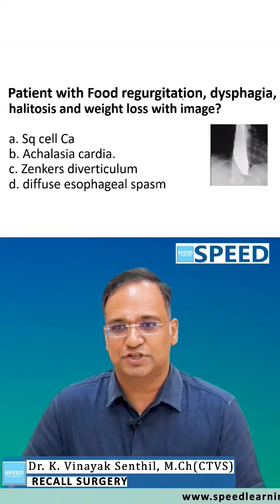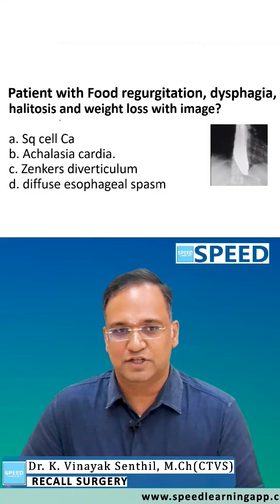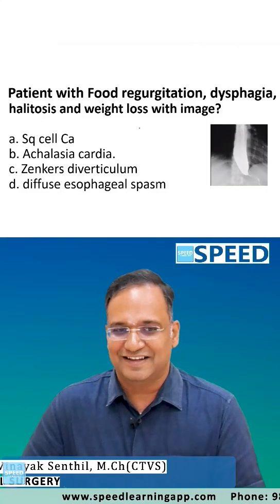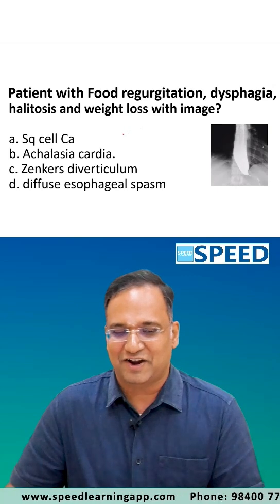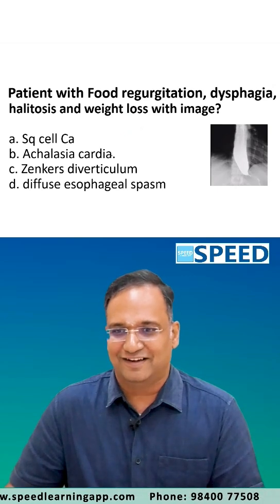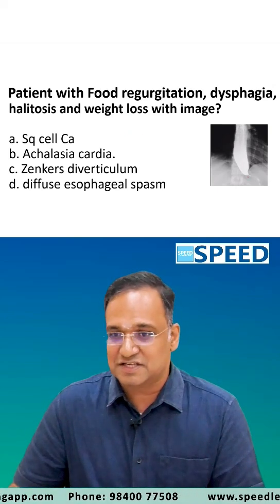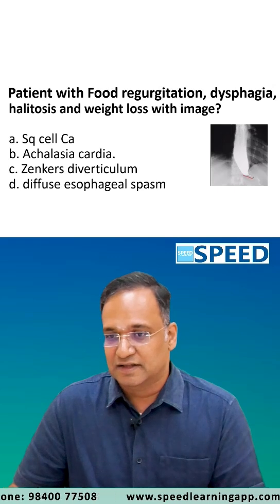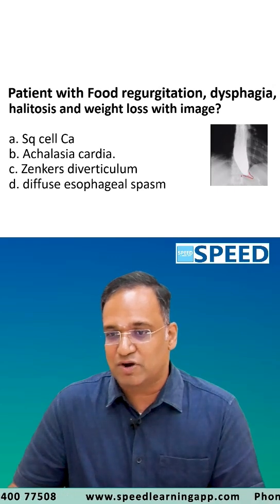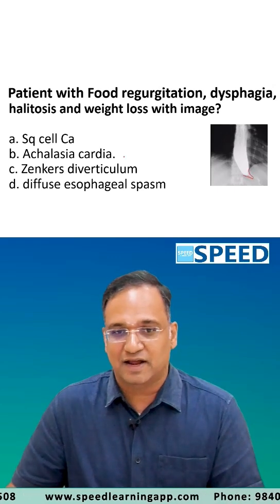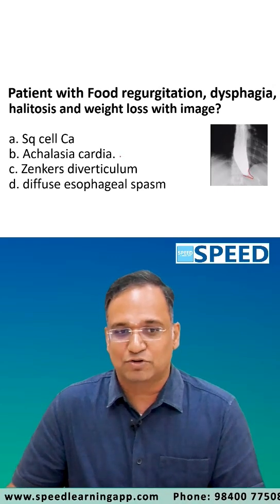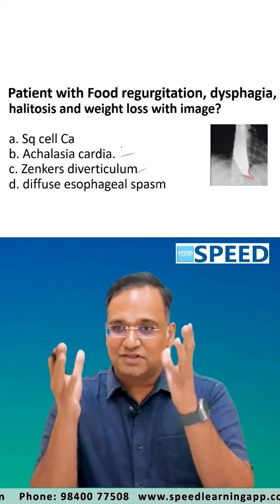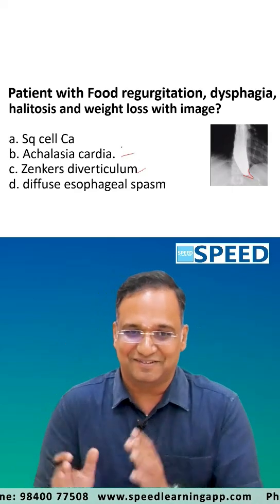A patient presenting with food regurgitation, dysphagia, halitosis, and weight loss — this is a classical triad of Achalasia cardia, provided an image is given showing a bird's beak appearance. If the image is not given, it could be a difficult diagnosis between Zenker's diverticulum and Achalasia cardia, because both present similarly.